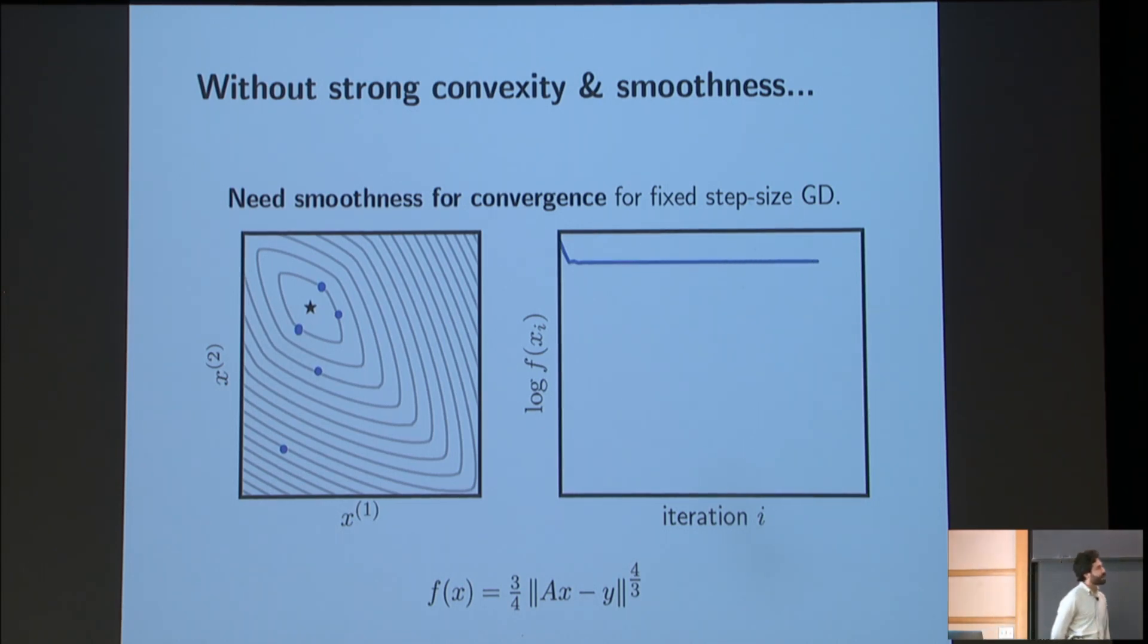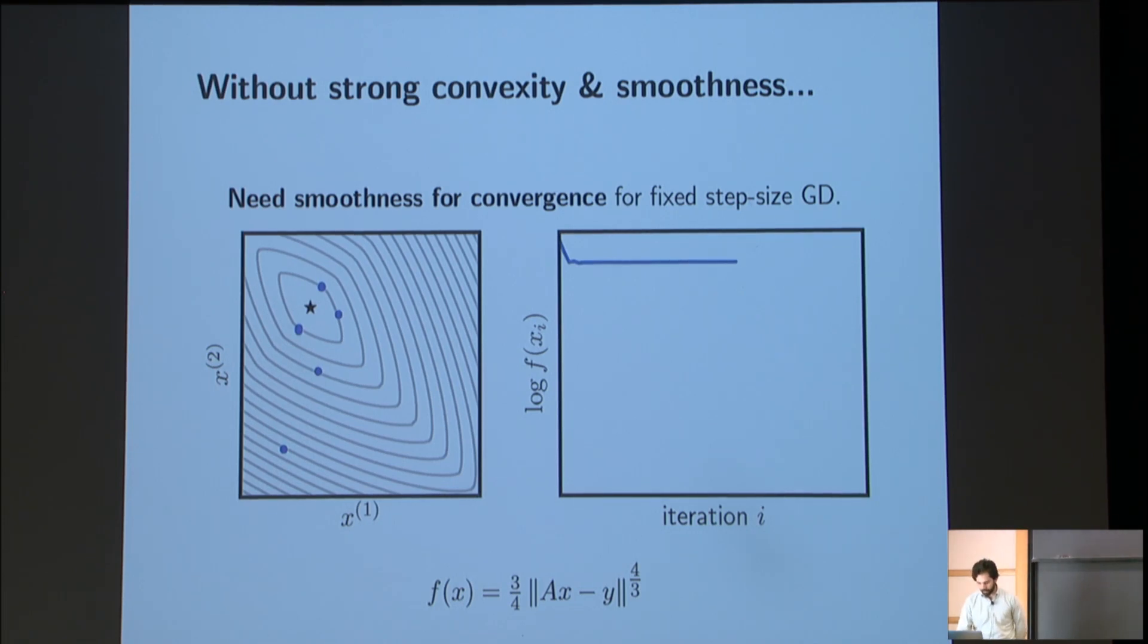So smoothness is the condition that we use to prove the convergence of fixed step size gradient descent. So if you were to just naively try to run gradient descent on a function like this one, you would find that the iterates don't converge unless you do something slightly more clever. Strong convexity is the condition that's used to prove the sort of linear convergence or the speed of fixed step size gradient descent. And so on this function that is not strongly convex, the iterates are converging to the little star, but we get this sublinear convergence. And in fact, a convergence rate of 1 over i is guaranteed for smooth convex f as long as you take the step size 1 over l to be smaller than 1 over the smoothness constant.